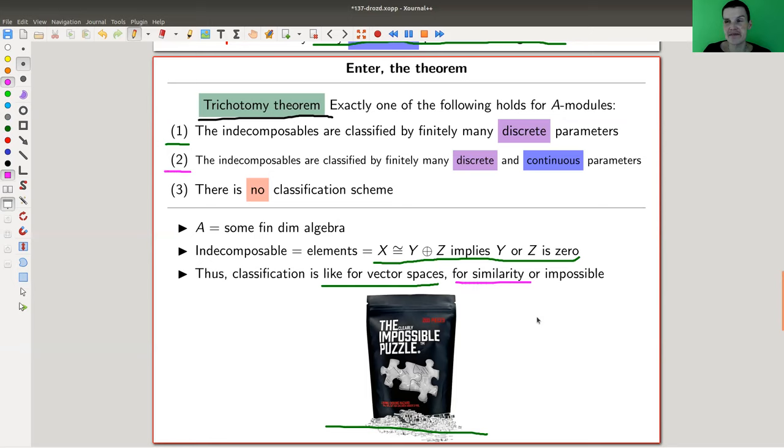So when you have discrete and continuous parameters but finitely many, and then there is the slightly disappointing case three, which is my impossibility puzzle, the clearly impossible puzzle. There's simply no classification scheme - you can forget it. So it's something you can prove that it's kind of Turing incomplete, so you can really not do it. You can simply forget it. And that's kind of a very strange theorem. So it's either super easy, reasonably easy, or impossible. There's nothing in between. Super easy like vector spaces, reasonably easy like conjugation of matrices, or forget it.